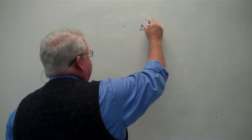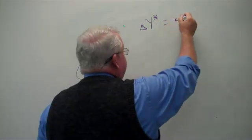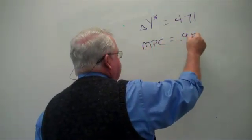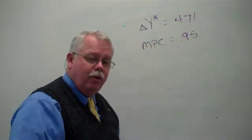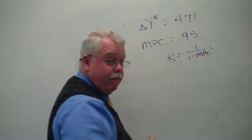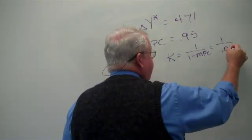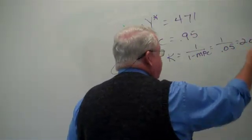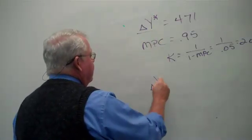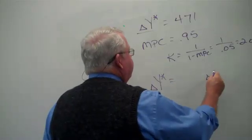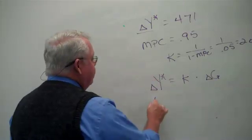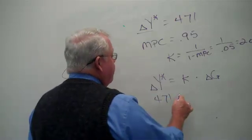Go back to our problem. We said we had a gap. The change in Y star that we needed was $471. Do you remember the MPC from our first model? The MPC was .95. If that's the MPC, can you tell me what the multiplier is? Well, the multiplier is 1 over 1 minus the MPC, which is 1 over 1 minus .95 or .05. So the multiplier now is 20. And when you go back to the concept, we say, well, how much do you want to change spending? Well, if you change government spending, it will be multiplied a multiple of times. Plug in the numbers for a minute and see what we get. If we want a $471 change in total spending and the multiplier is 20, what happens?